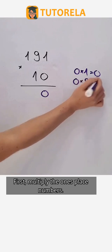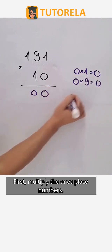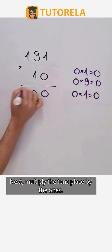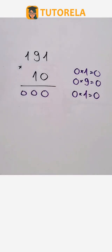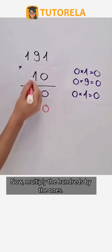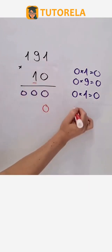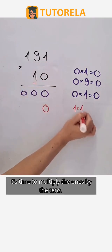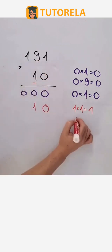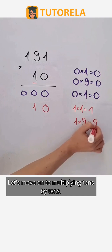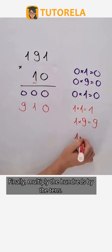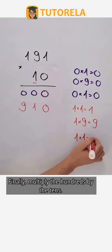First, multiply the ones place numbers. Next, multiply the tens place by the ones. Now, multiply the hundreds by the ones. Then multiply the ones by the tens. Let's move on to multiplying tens by tens. Finally, multiply the hundreds by the tens.